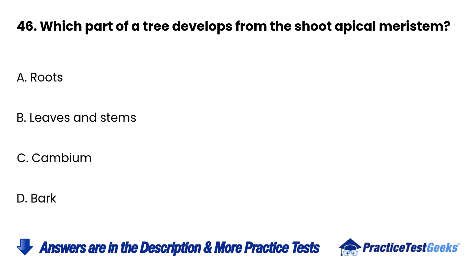Question 46: Which part of a tree develops from the shoot apical meristem? a. Roots. b. Leaves and stems. c. Cambium. d. Bark.